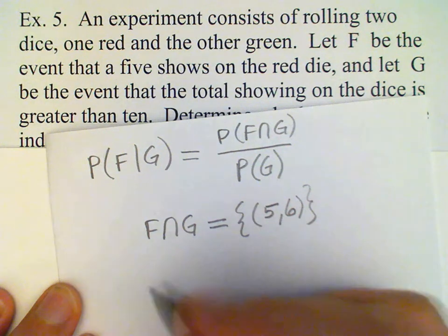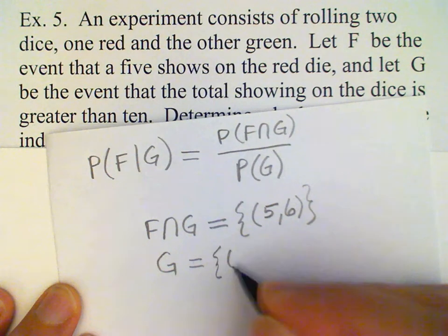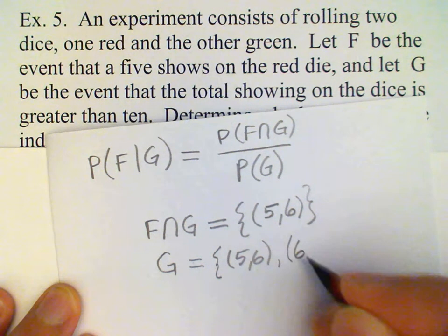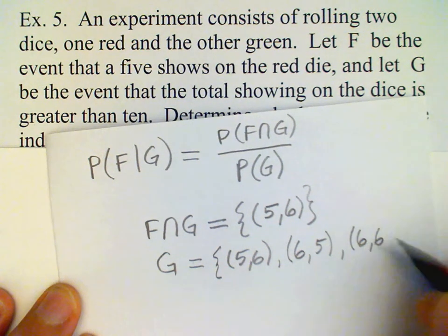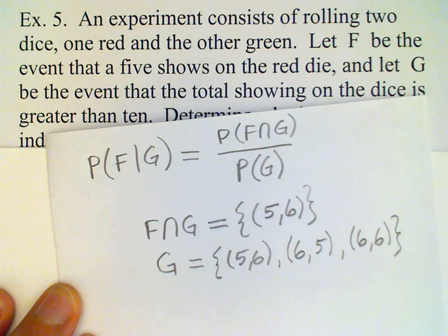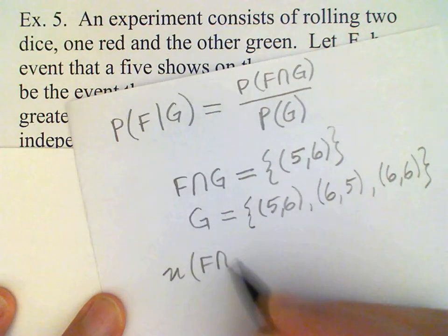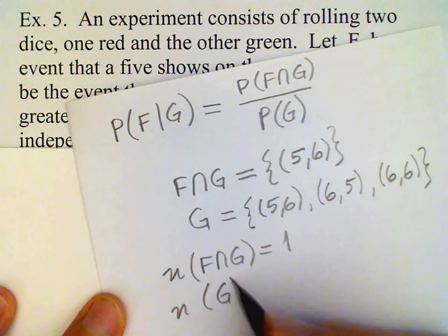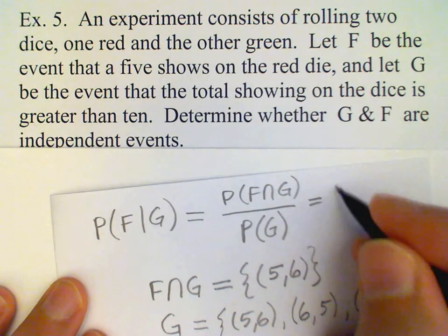On the other hand, G is the set of outcomes where the total is greater than ten: red five and green six, red six and green five, or both sixes — all totals greater than ten. So the number of outcomes in F intersect G is one, and the number in G is three. Therefore the conditional probability P(F|G) is one-third.